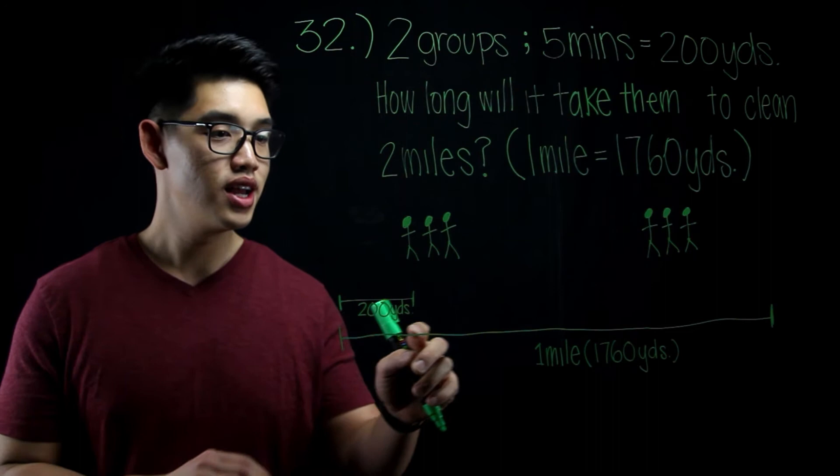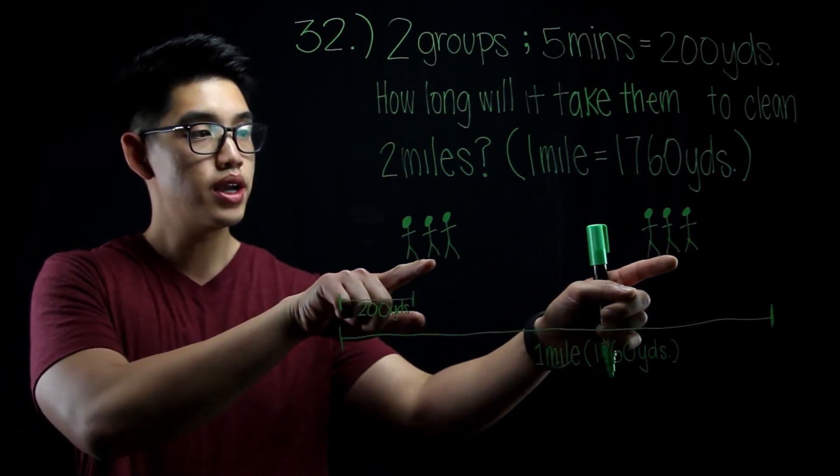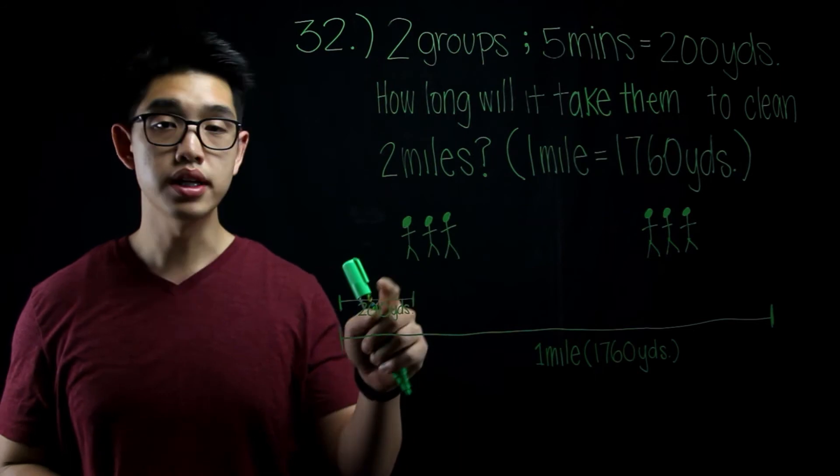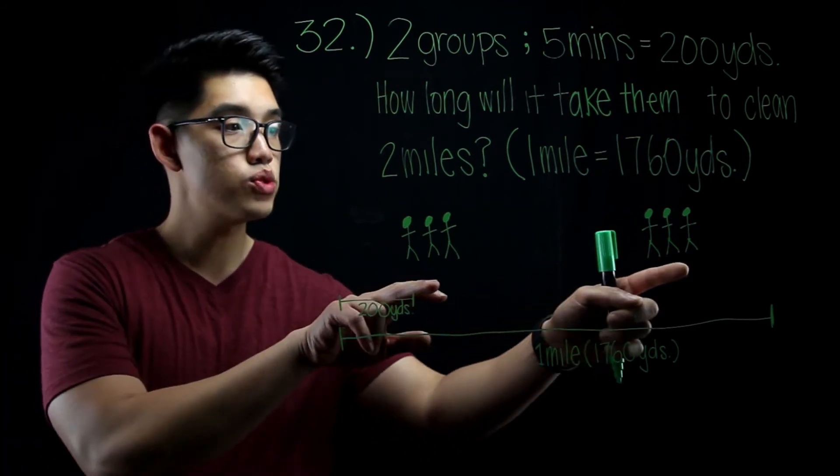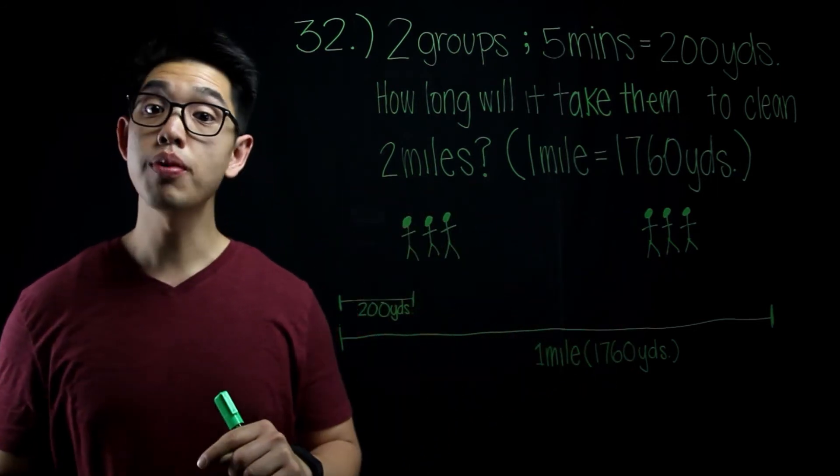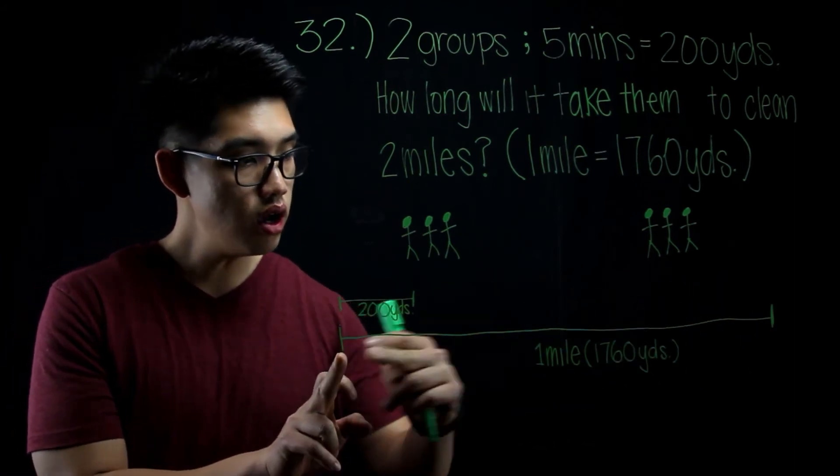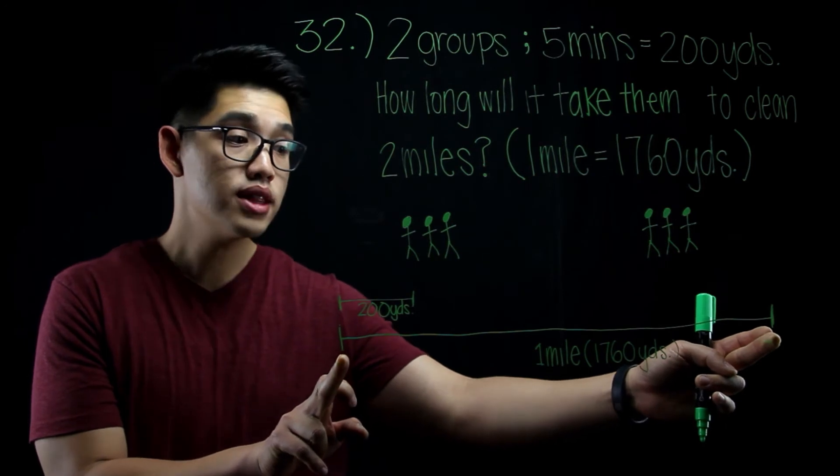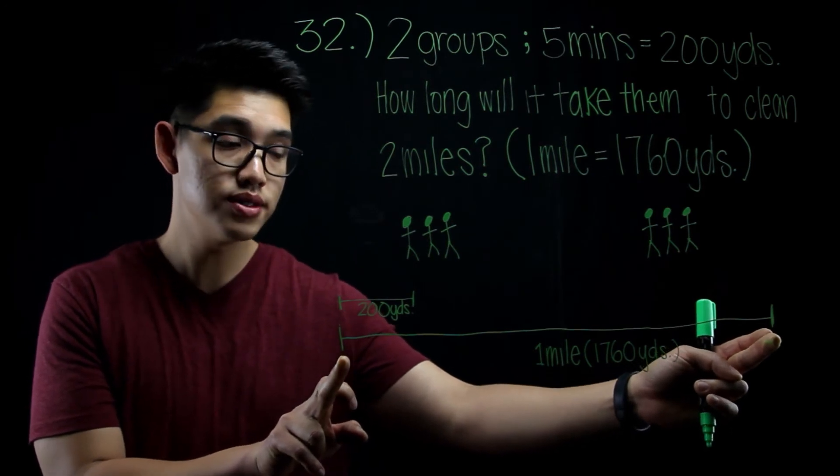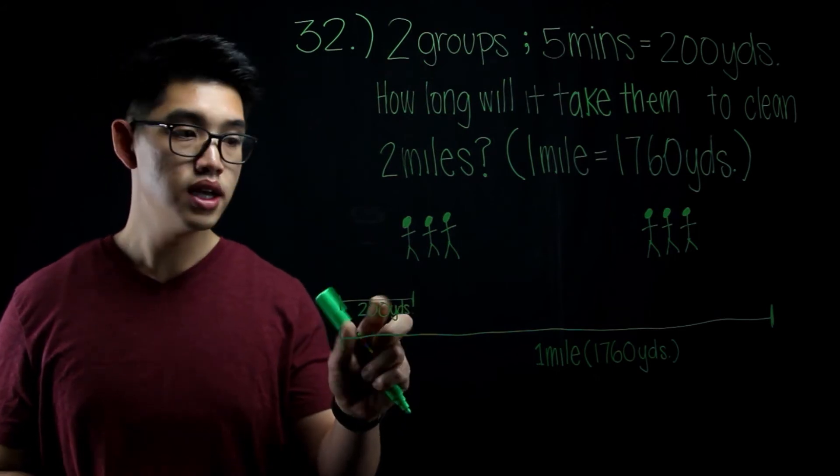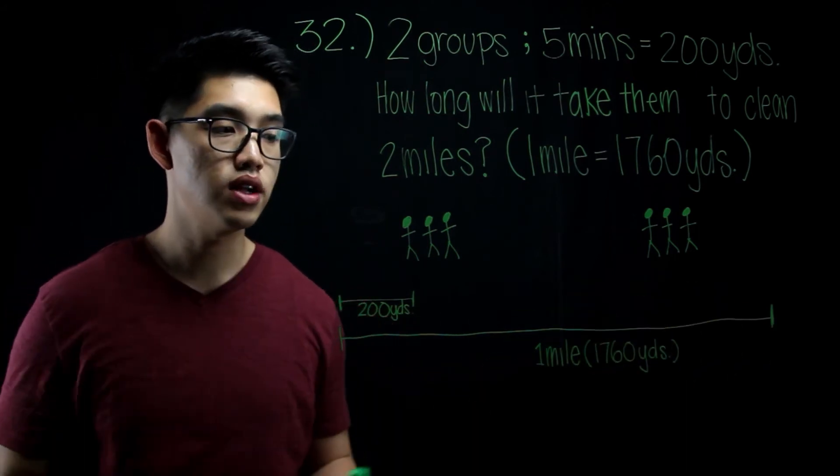Now, going back to the question, if there are these two groups right here, and they split the work evenly, we can say that each group cleans up 1 mile. So 1 plus 1 will equal 2 miles. If I say that this whole thing from here all the way to here, that's 1 mile, or 1,760 yards, we need to try to figure out how many times 200 yards can go into 1,760.